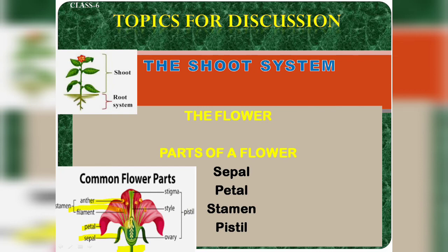The ovary is the basal swollen part; it contains tiny ball-like structures called ovules. The stigma is the sticky tip which receives the pollen grains — pollination occurs when pollen grains land here, and this will be explained further in the next topic. The style is the long tube that connects the ovary to the stigma.